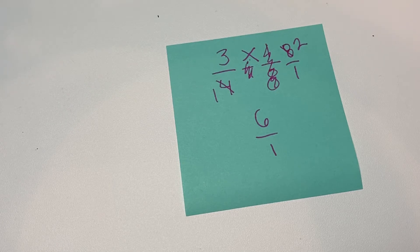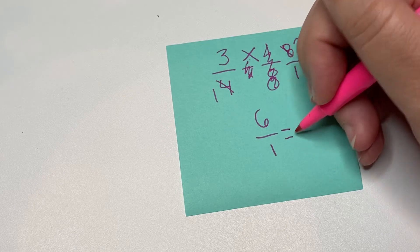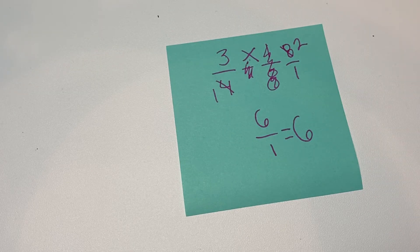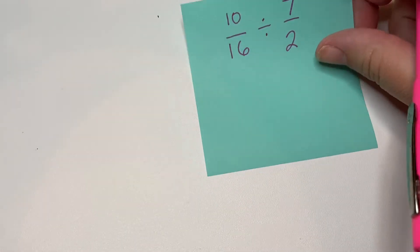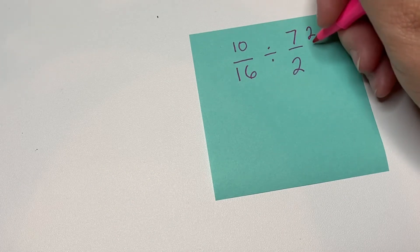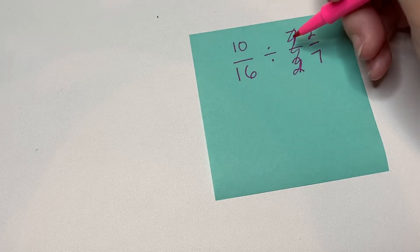So our final answer here would be six. Let's look at another one. So remember, we're going to find the reciprocal here, which would be two-sevenths. Flip this up over, cross that out, this division is going to become multiplication.